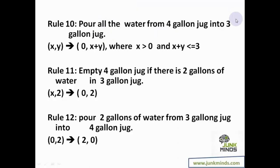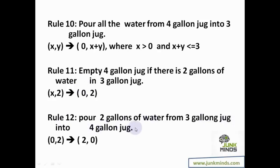Rule 10: pour all the water from the four gallon jug into the three gallon jug, with water in the four gallon jug and total water at most three gallons. Rule 11: empty the four gallon jug if there are exactly two gallons in the three gallon jug, so that water can later be poured into the four gallon jug. Rule 12: pour two gallons of water from the three gallon jug into the four gallon jug, resulting in the state (2, 0).